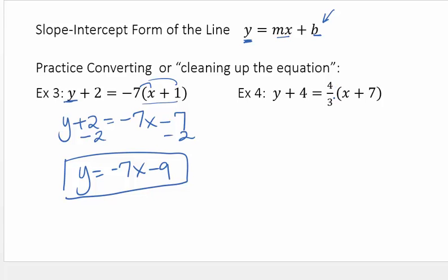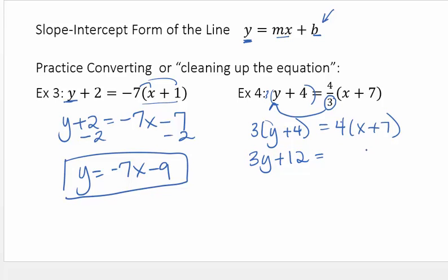Take whatever number is in this denominator and move it over here outside. So now I have, notice the 4 stayed put. The 3 moved over to the left side. And now I'm going to distribute. Distribute the 3. So I have 3y plus 12. Distribute the 4. 4x plus 28.